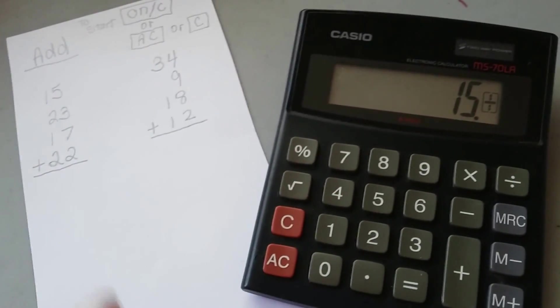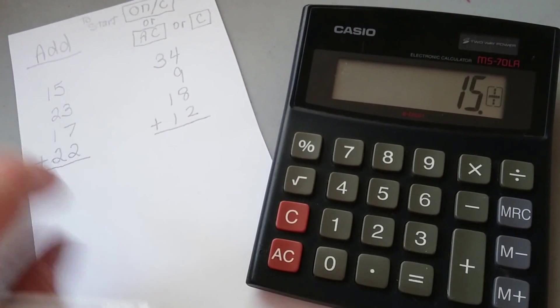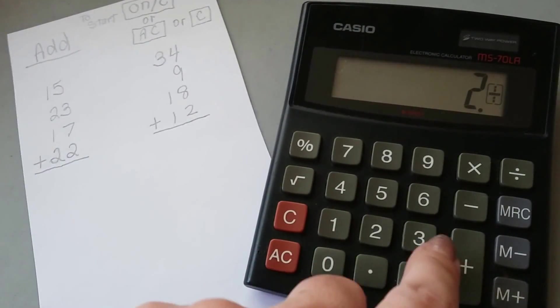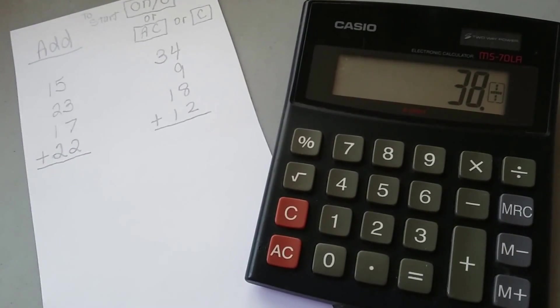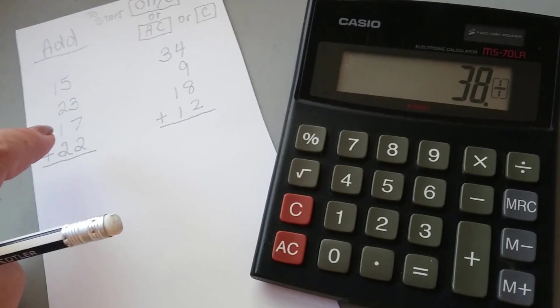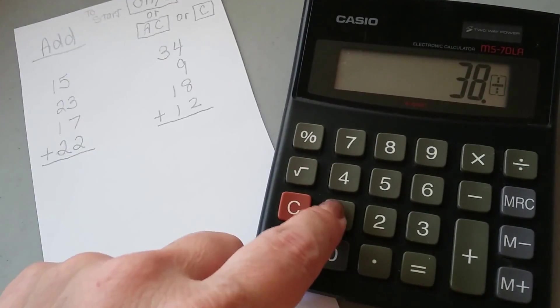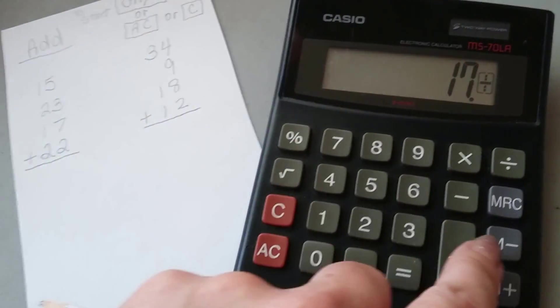See a plus sign appeared there? Now we're going to add the 23, so I have to hit the 2, and then the 3, and then the plus again. Then I hit the 17 as a 1 and a 7. 1, 7, plus.